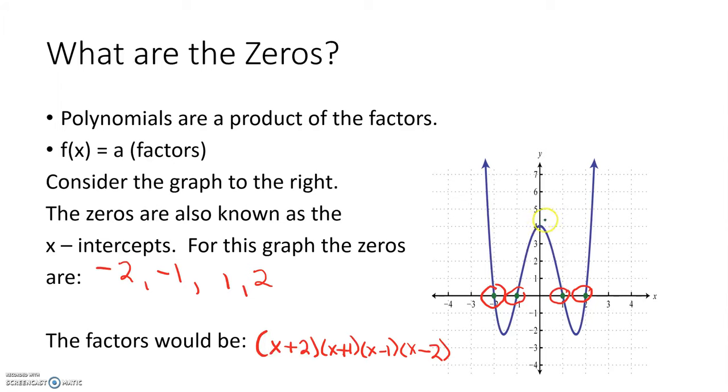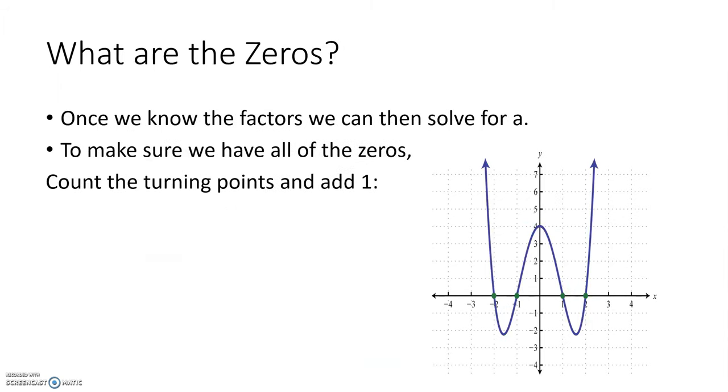Other key things we can see from the graph are the y-intercept, which is the point (0, 4). We can notice the two minimums here – their local minimums are here and here. And we notice the end behavior. Both ends are going to positive infinity. This means this is going to be a positive, even function.